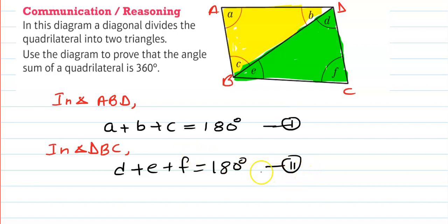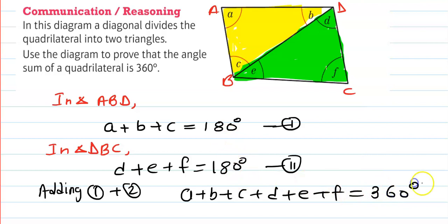Now what you need to do? You add both equations. So if you add, let's write down here, adding one plus two. So what will happen? You write down A plus B plus C, and then you add D plus E plus F. And right hand side, 180 and 180 becomes 360 degrees.